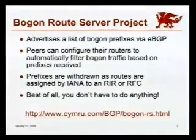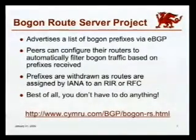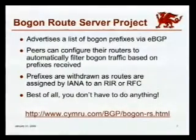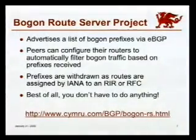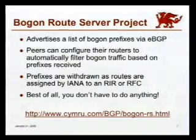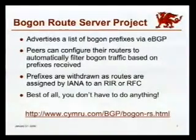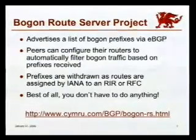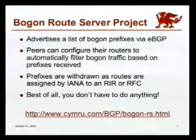One of the first resources we offer to help with Bogon filtering is the Bogon route servers, which are a group of routers that advertise the Bogon prefixes to their peers via eBGP multi-hop. Through a couple of config tricks, peers can configure their routers to automatically drop traffic to the Bogons based on the prefixes they receive. When IANA assigns a prefix for use by an RIR, we simply stop advertising it from our route servers and you stop blocking it automatically.